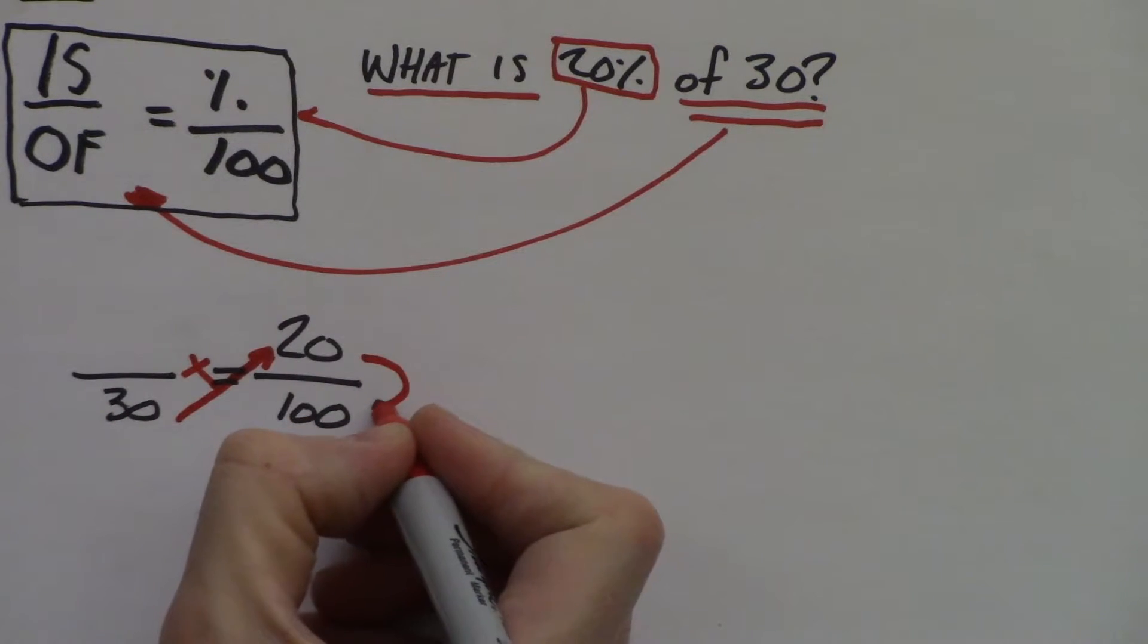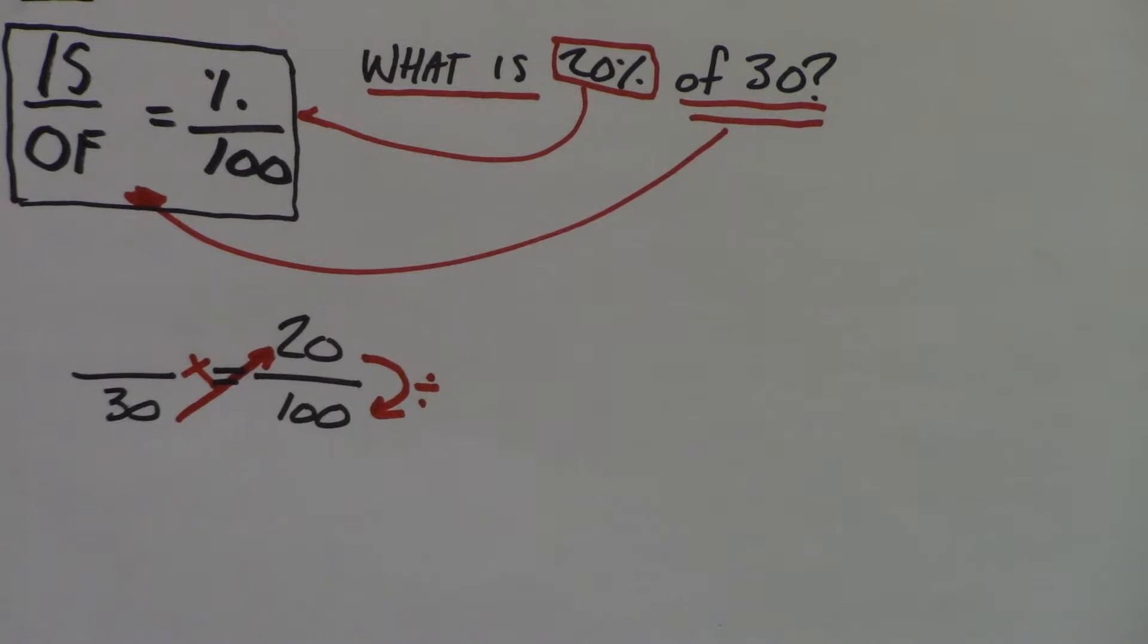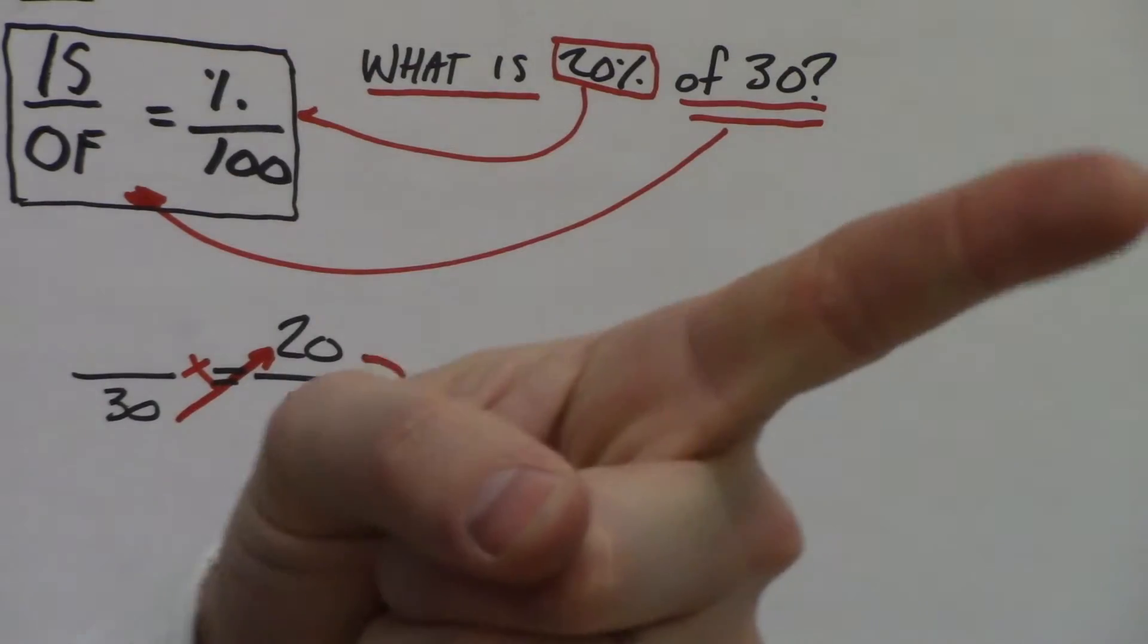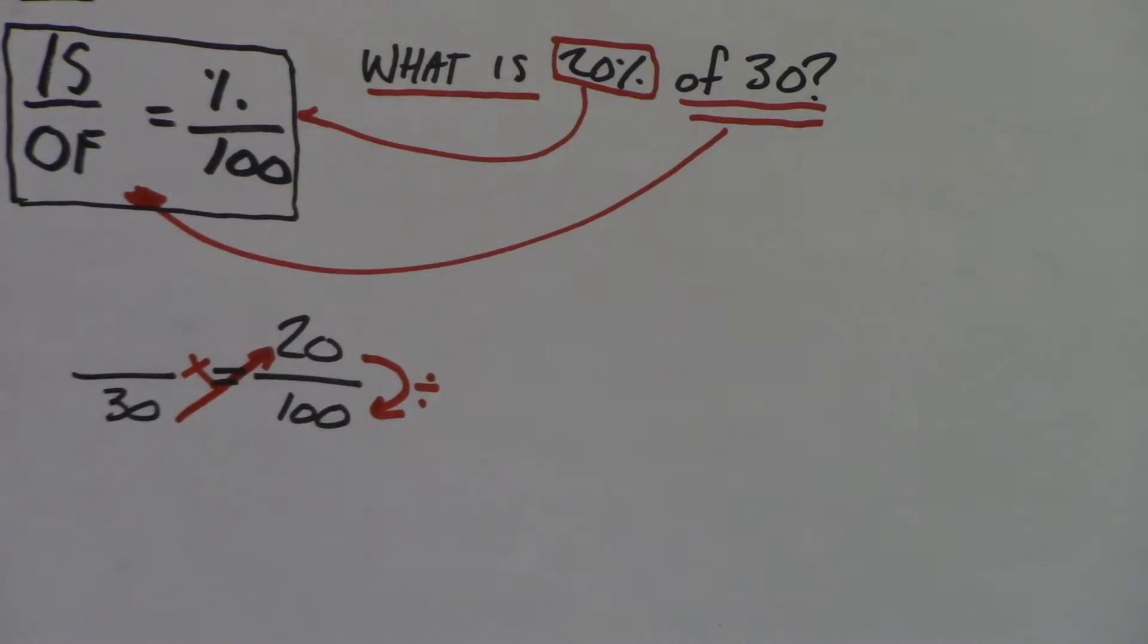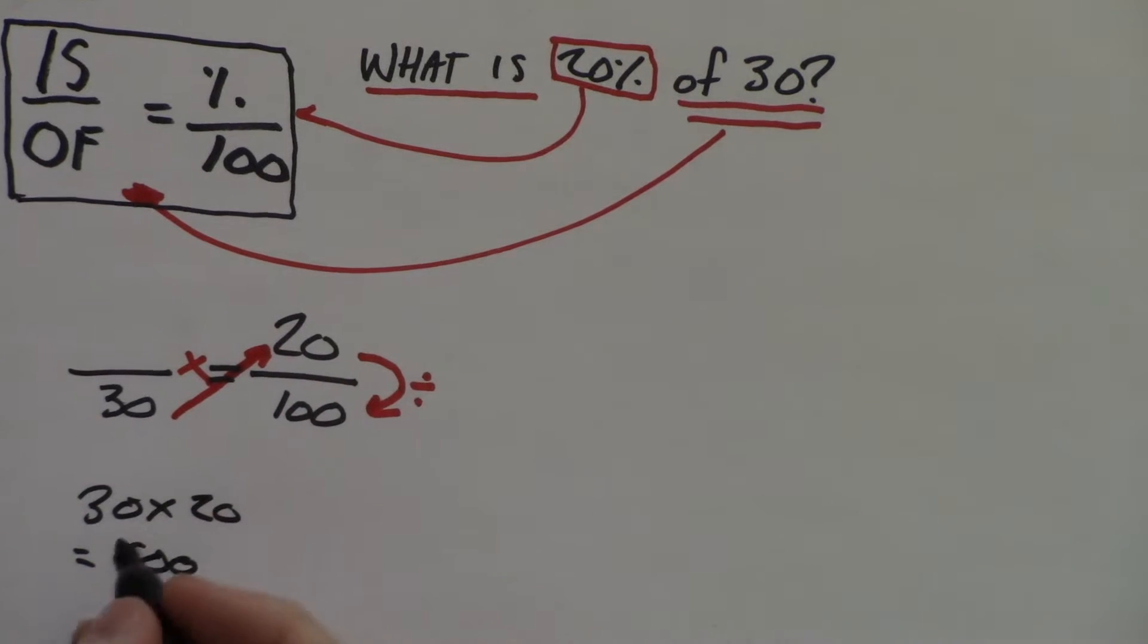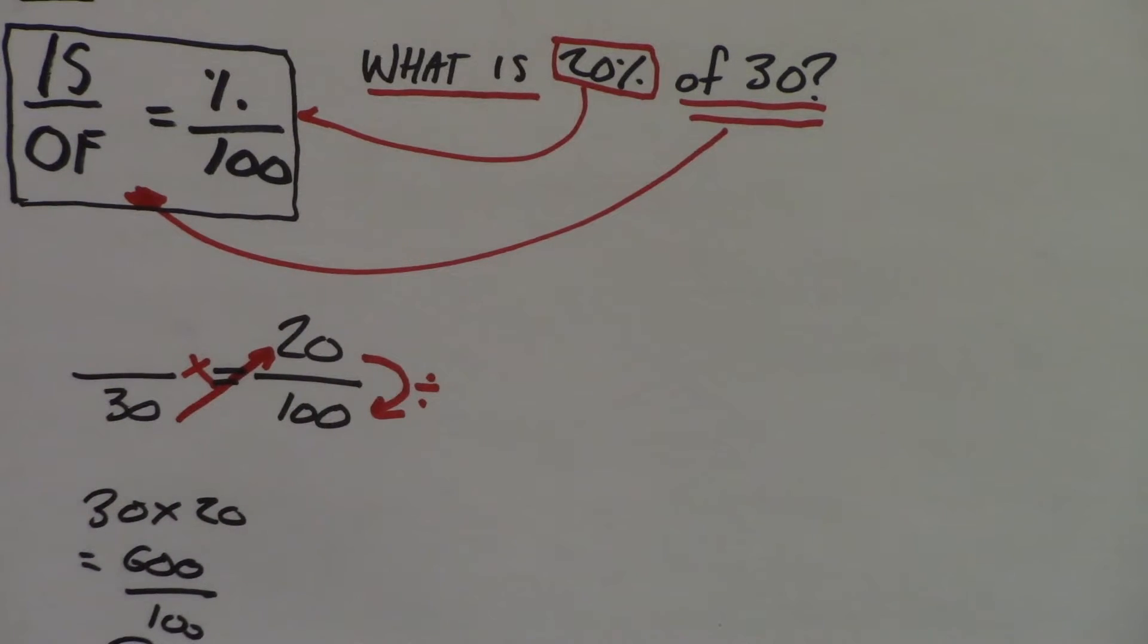Once you cross multiply, then you divide by the remaining number. So if I was to just draw out my steps, which is always a good idea: step one, 30 times 20 equals 600. Obviously. Then I'm going to divide by 100. So 6 is our answer.